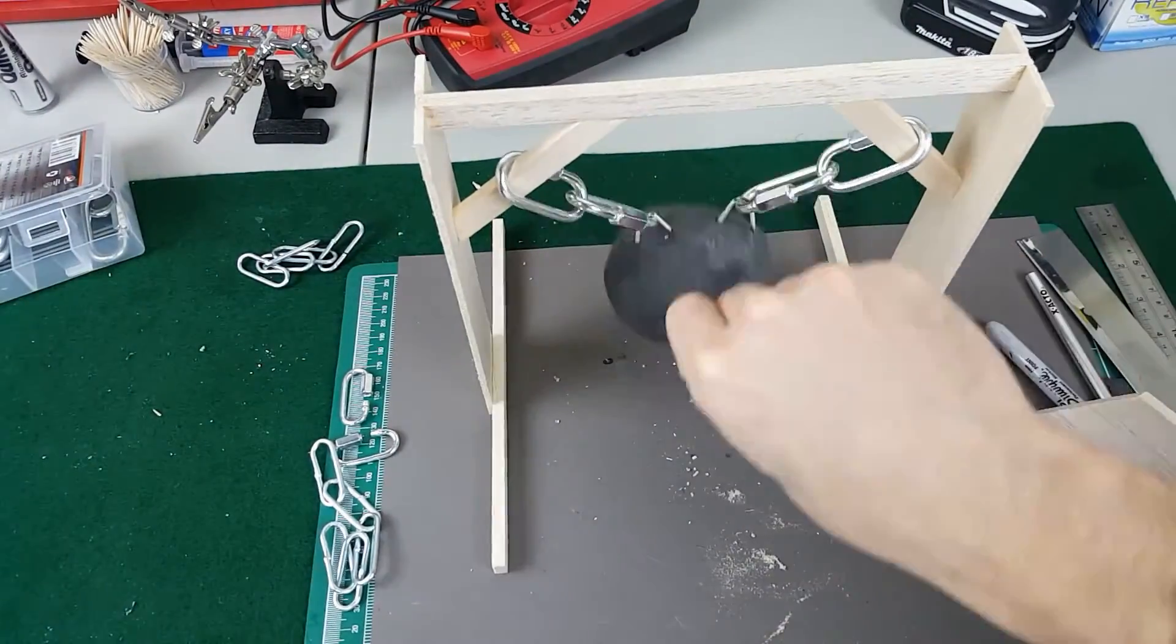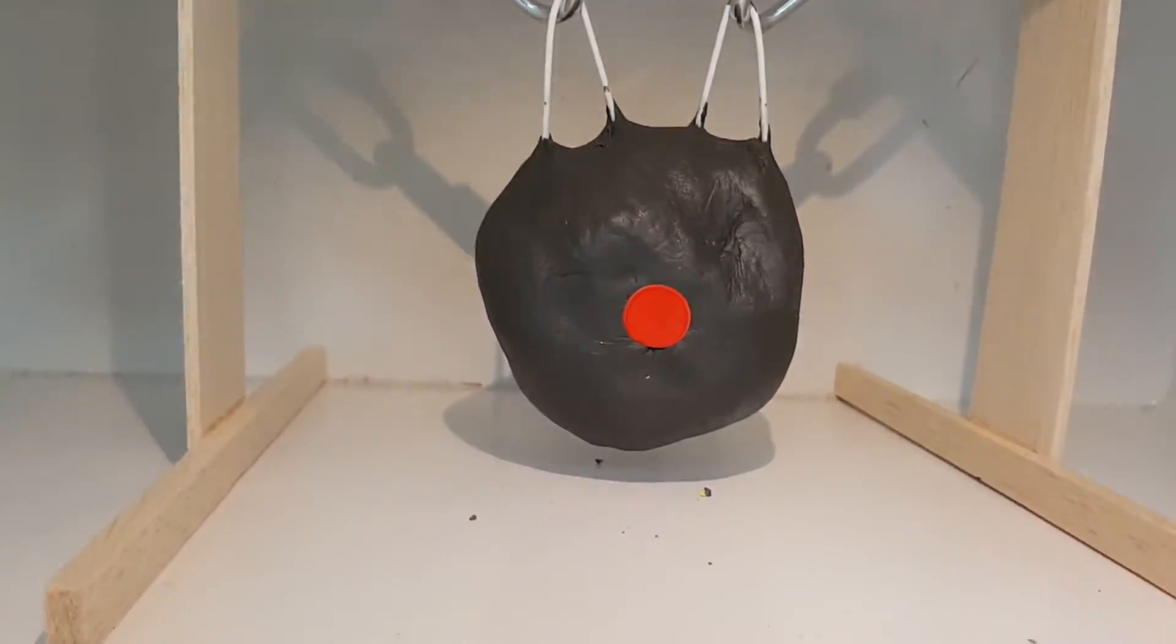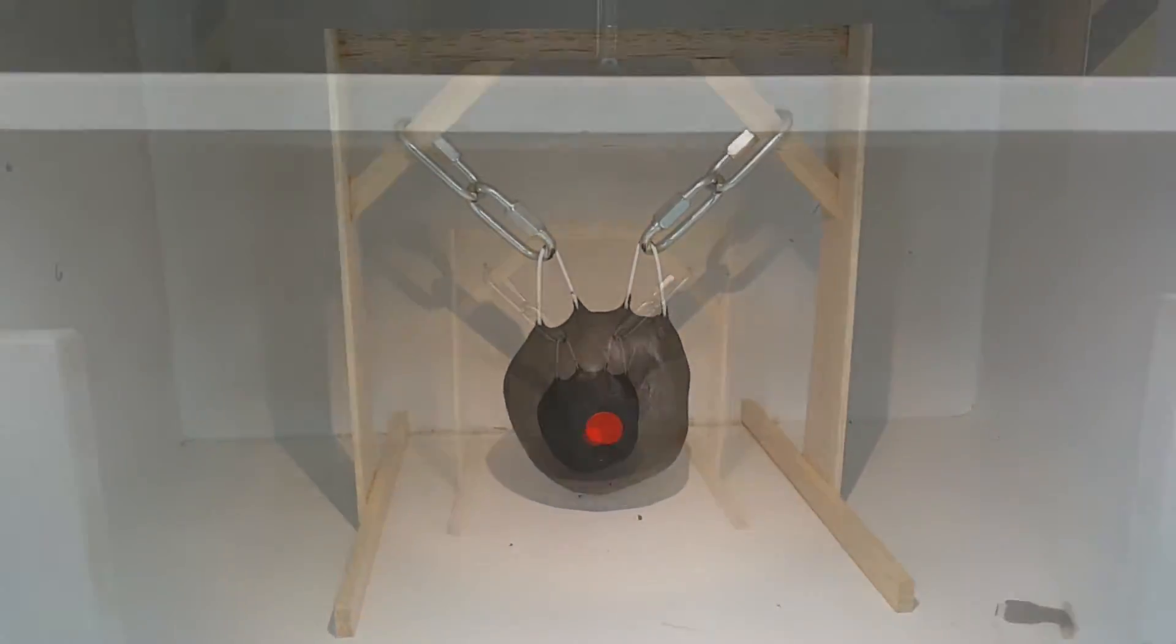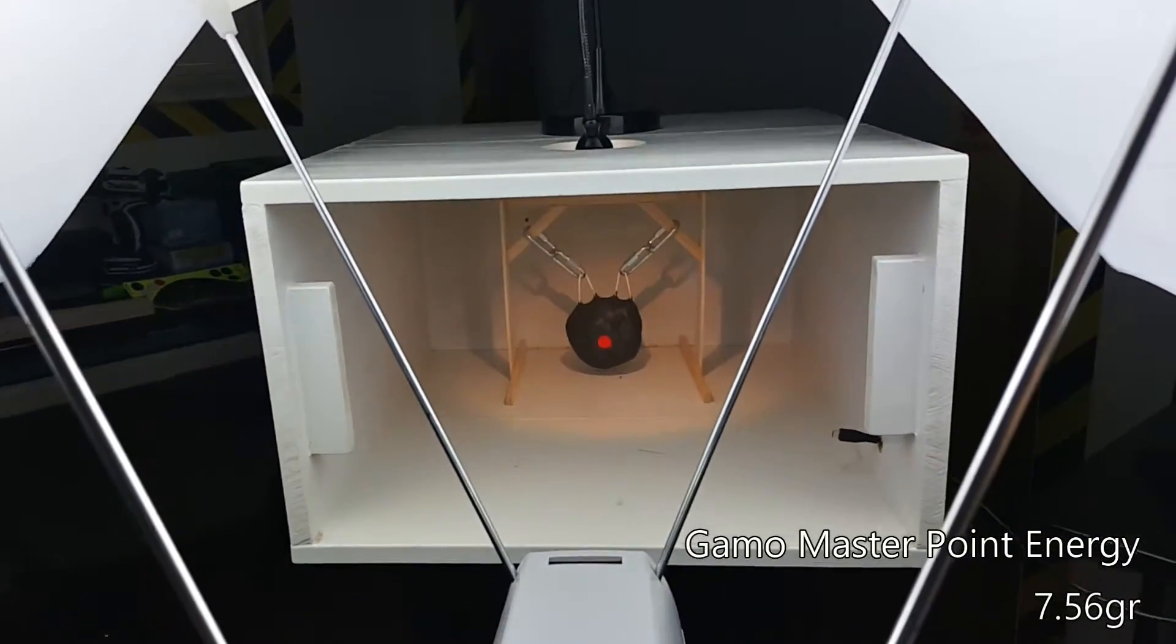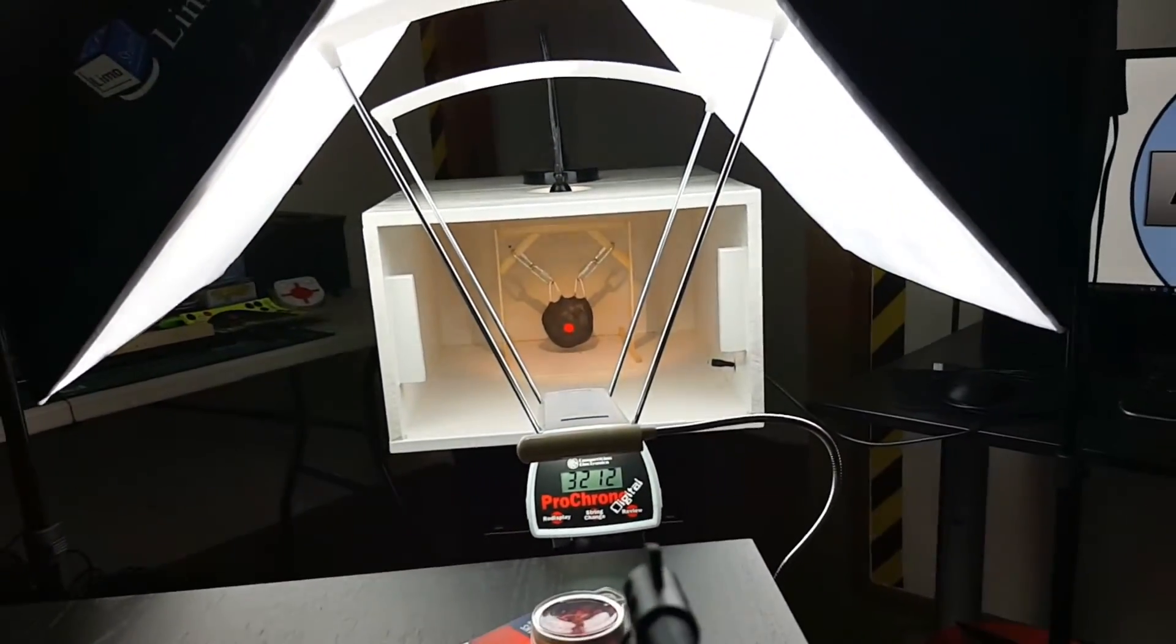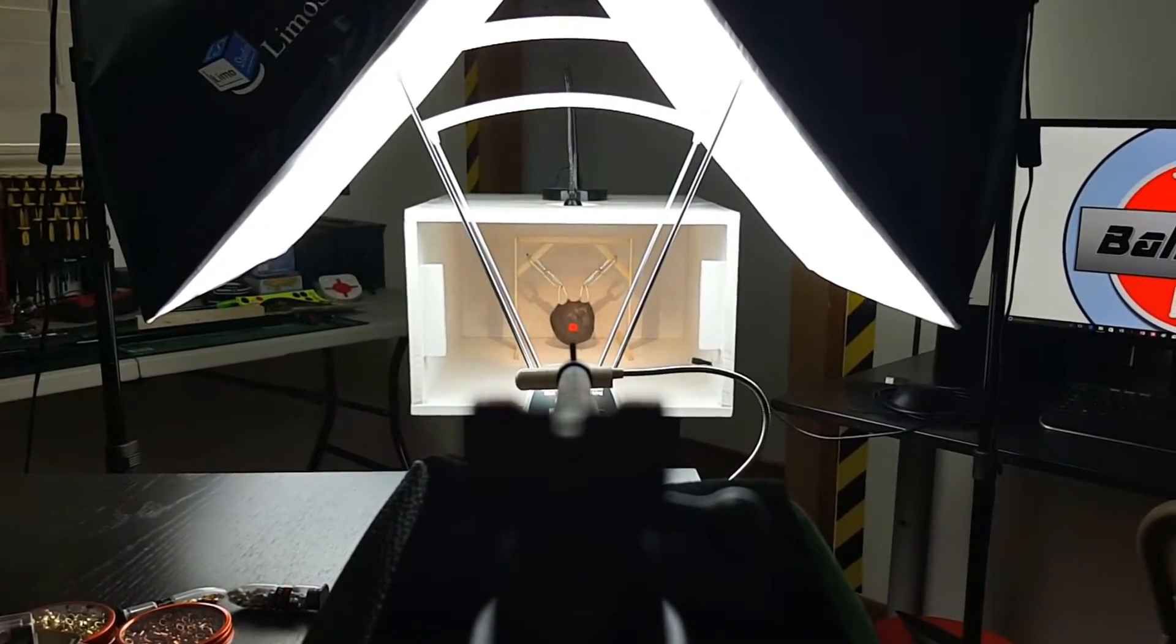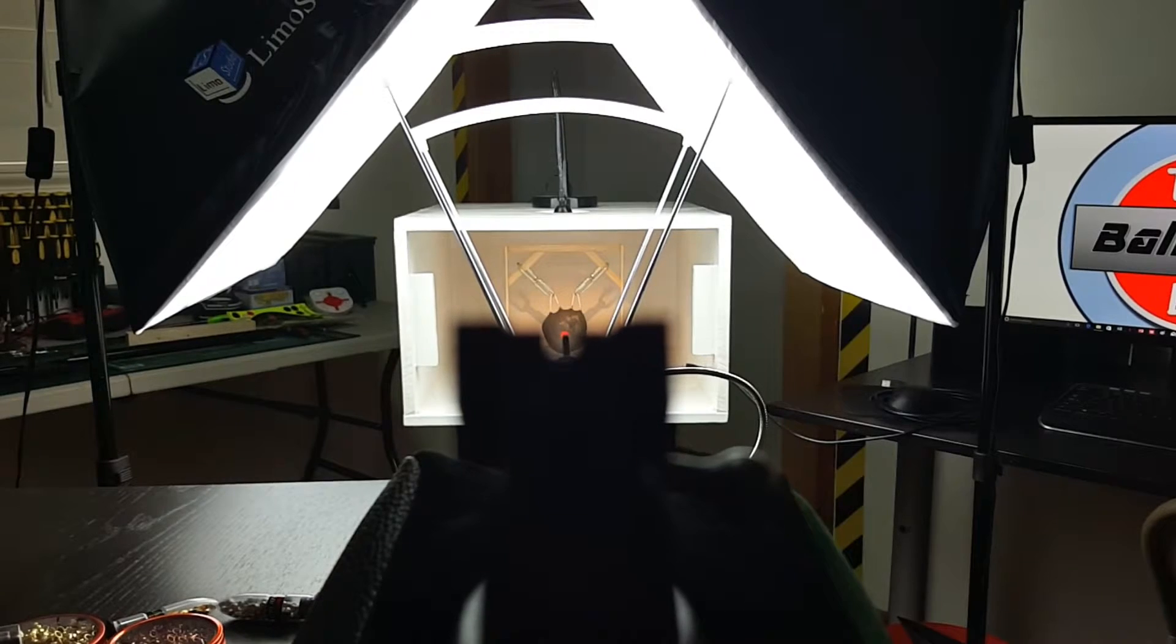Okay, let's get started. We'll be first firing the Gamo Master Point, starting with five pumps. We'll add five pumps to each subsequent shot until we have a good reason to stop. We'll be shooting through this device called a chronograph which measures the pellet's velocity.